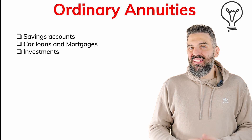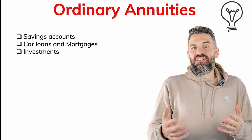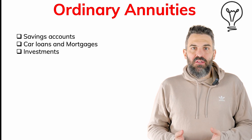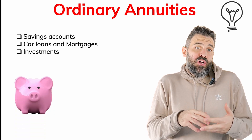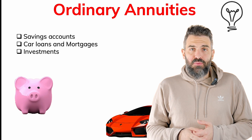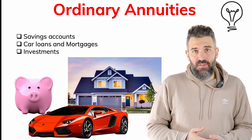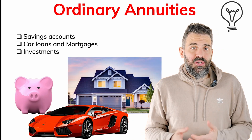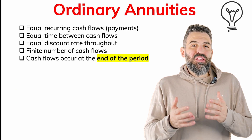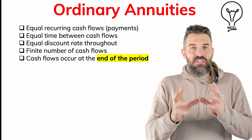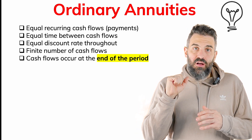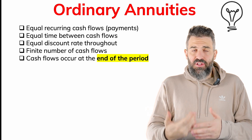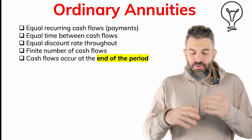Even in our day-to-day lives, examples of annuities include saving for retirement, taking out a car loan, or having a mortgage payment. So what is an annuity? An annuity is a recurring cash flow with very specific characteristics. It has to be an equal cash flow — you receive the same amount every period, for example $100 every year for four years.